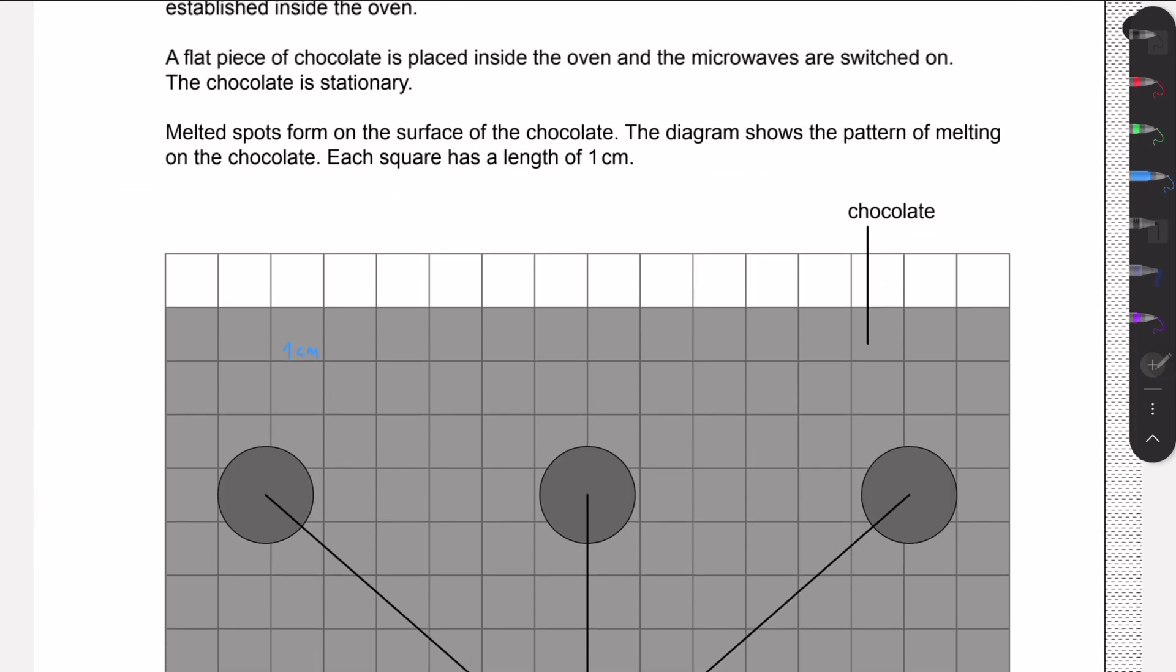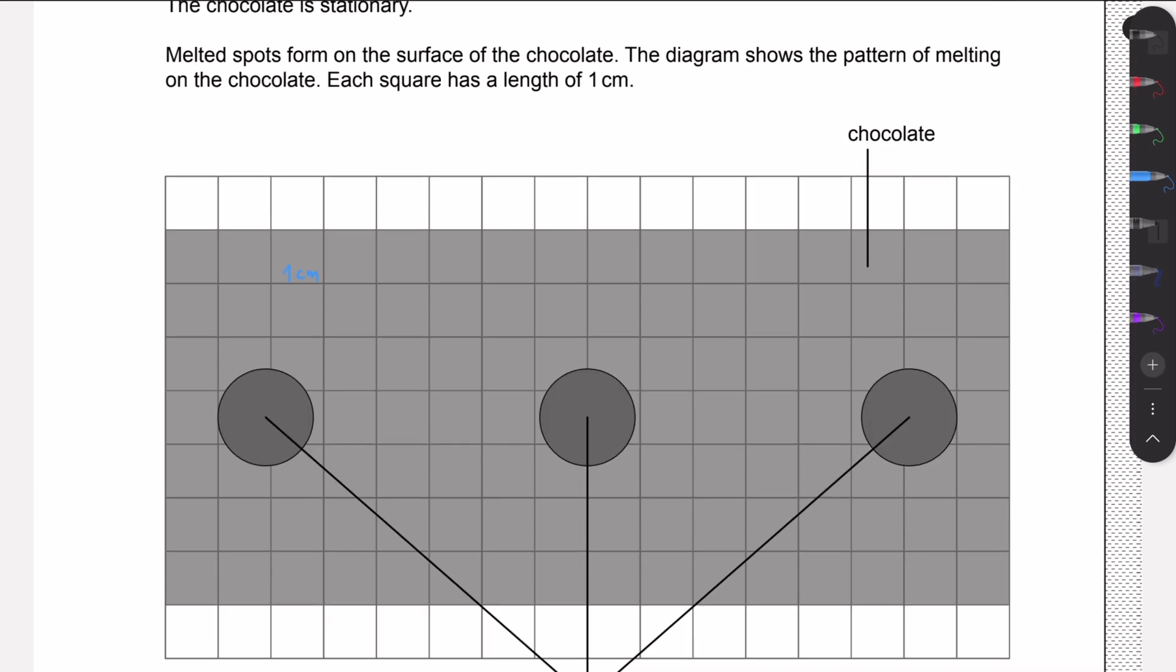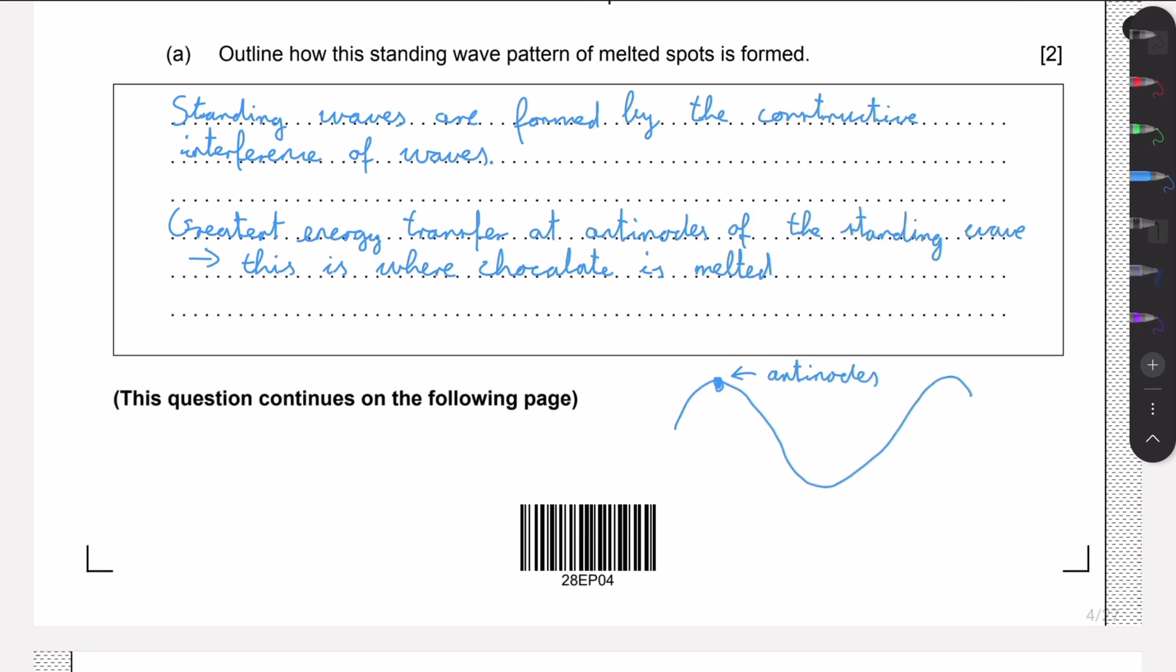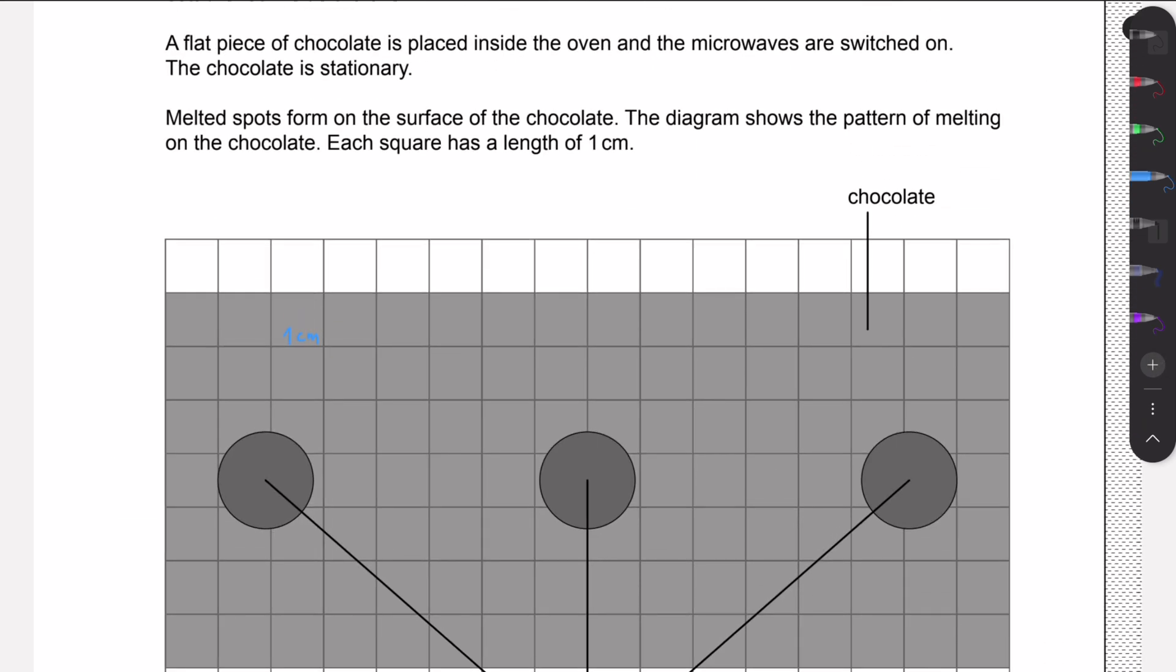We have this diagram here and we are told that every square has a length of one centimeter. If we think about this pattern of anti-nodes, we know that anti-nodes are both the maximum and minimum positions of displacement, and so these are where the meltings will happen.